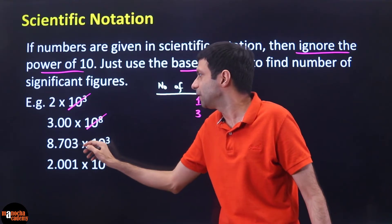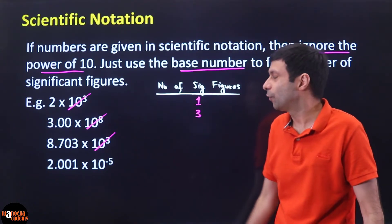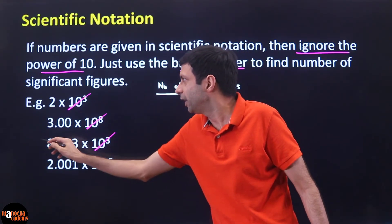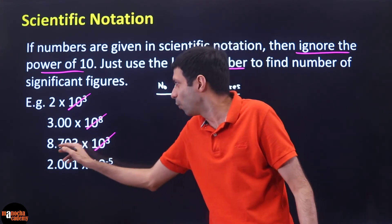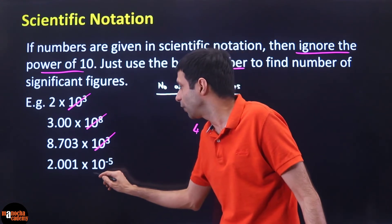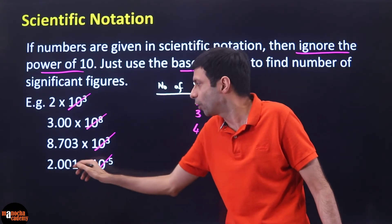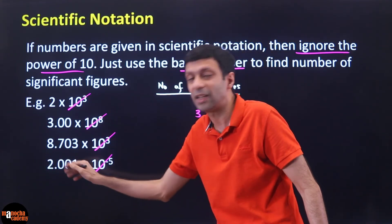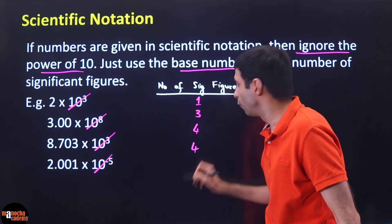How about 8.703 × 10³? Forget the power of 10. Looking at 8.703, there's a decimal point — delete all beginning zeros, but there are none in scientific notation. So 1, 2, 3, 4 — all four digits are significant. Similarly, 2.001 × 10⁻⁵: ignore the power, look at 2.001 — no beginning zeros, zeros are in the middle, so count all four digits — four significant figures.